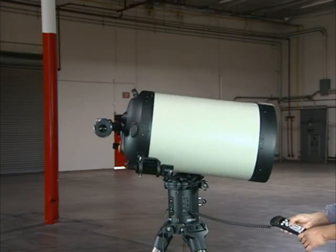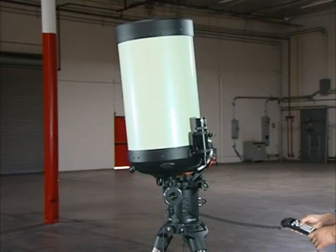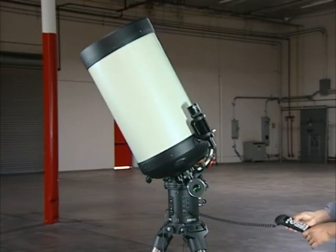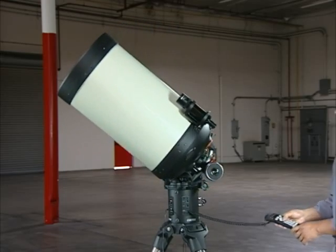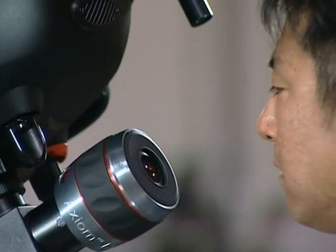There are many other optical designs out there that advertise themselves as astrograph quality. In reality, they only produce pinpoint stars across a curved focal plane. While this may be acceptable for visual observing, stars will appear out of focus at the edge when used with a flat chip sensor of a digital camera.